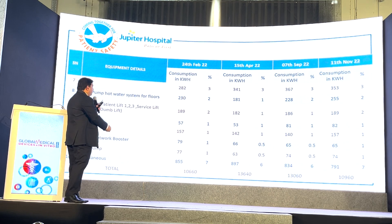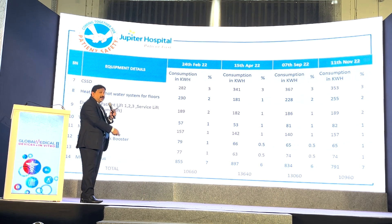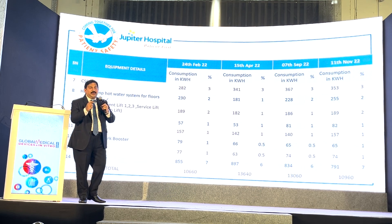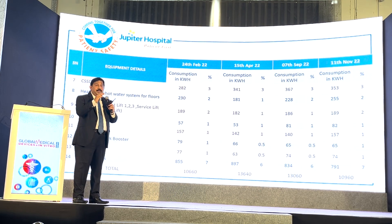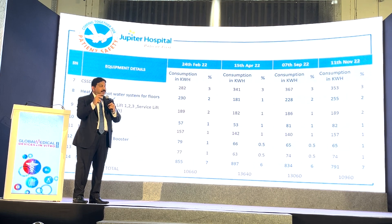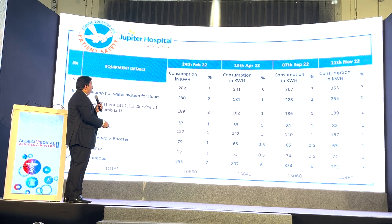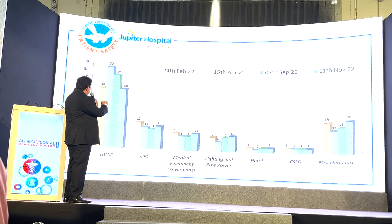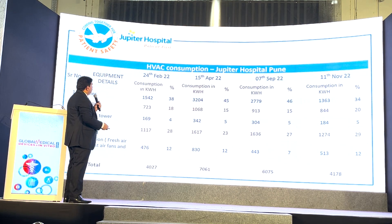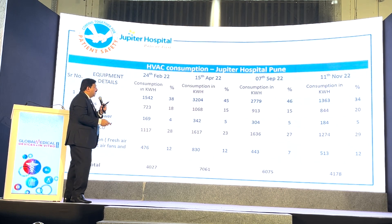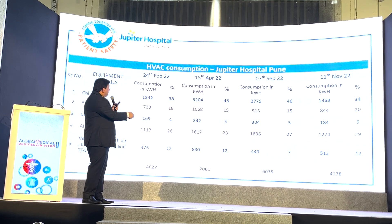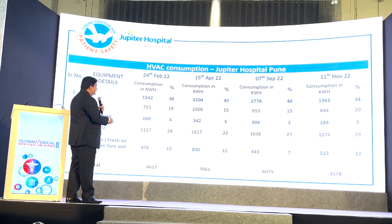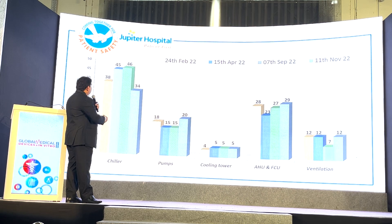Here you can see — in Thane it was somewhere around 22,000 units; here in Pune it is 13,000. This is per-day saving. The same area is there in both hospitals, but this is the saving that is happening. In remaining areas, HVAC is around 38-47%, only in April it was 52%. For chiller specifically, Thane was more than 52% savings; here in Pune it is less than that.